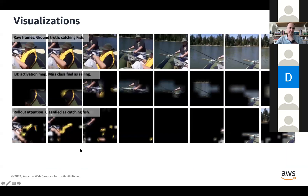Looking at failure cases to understand where I3D fails: a lot comes up where there's a non-uniform scene with a lot of different things happening. I3D with average pooling predicts 'rowing' because the scene somewhat looks like rowing, but the transformer is able to attend really well to the fishing pole and the boy holding the fishing pole.